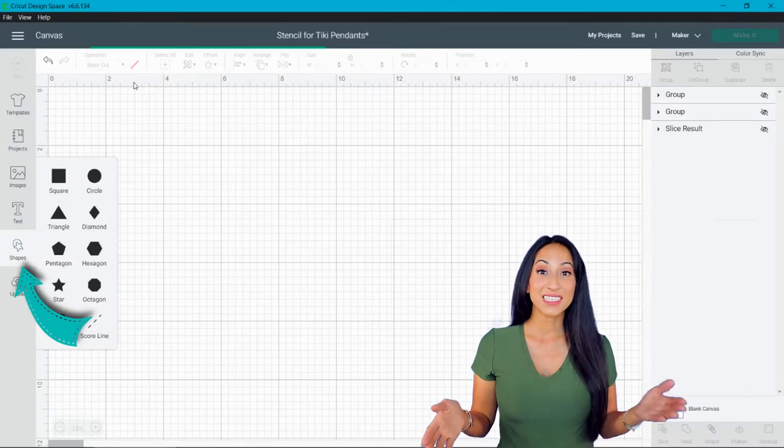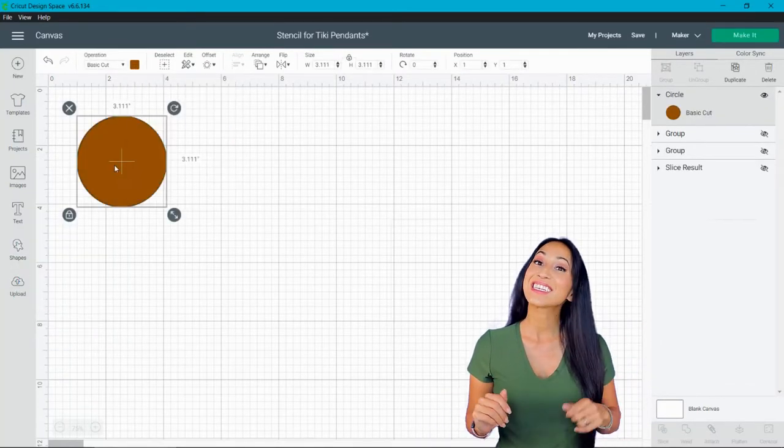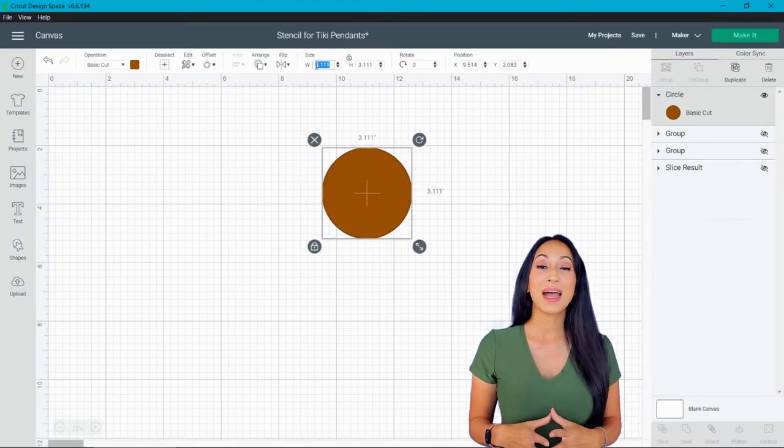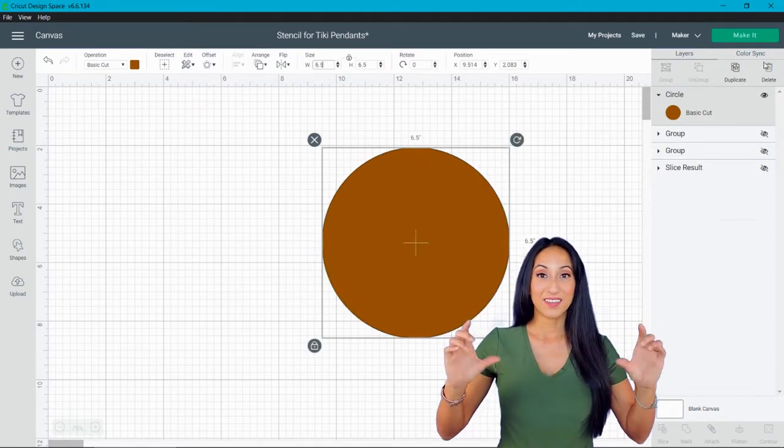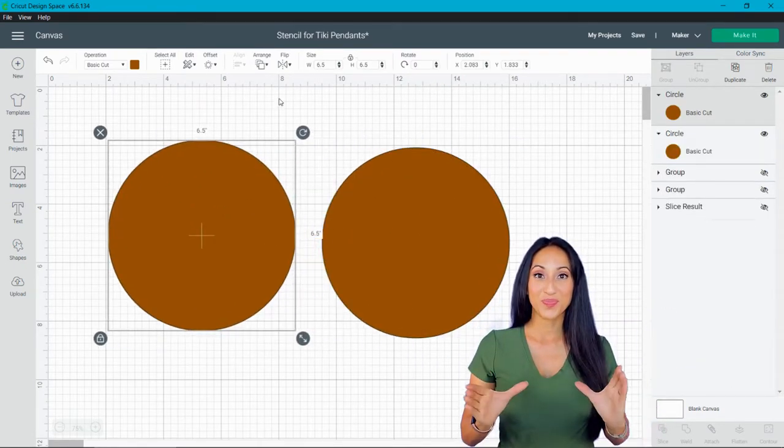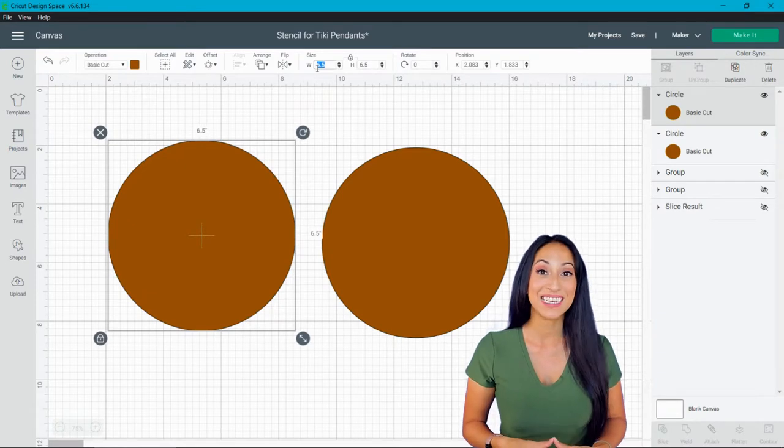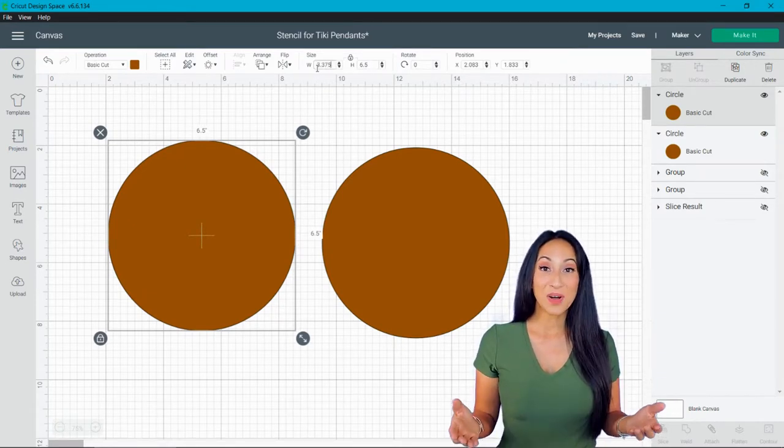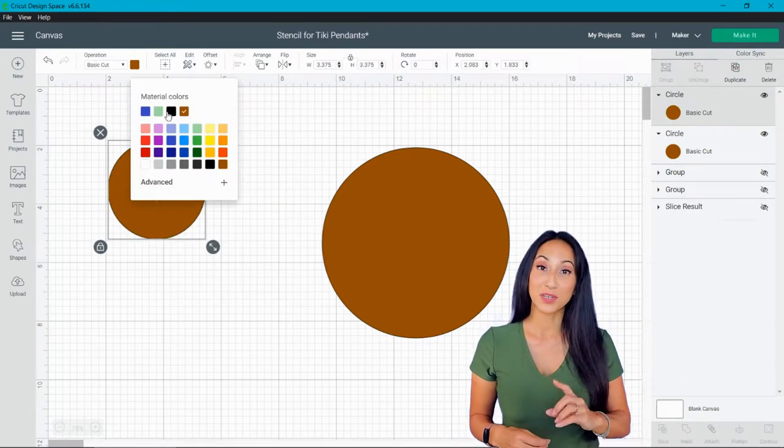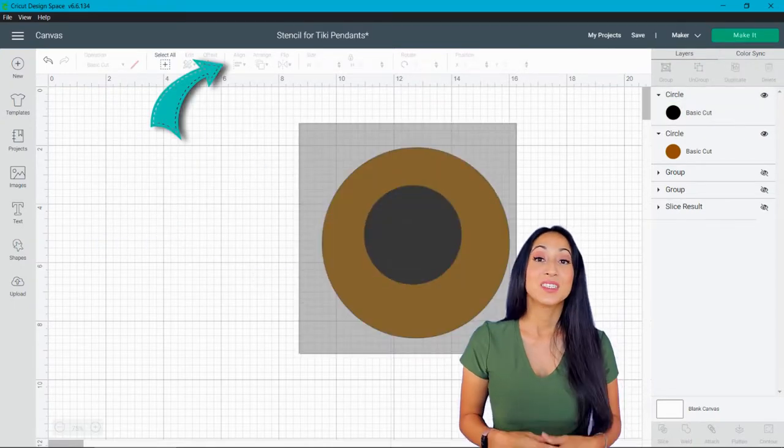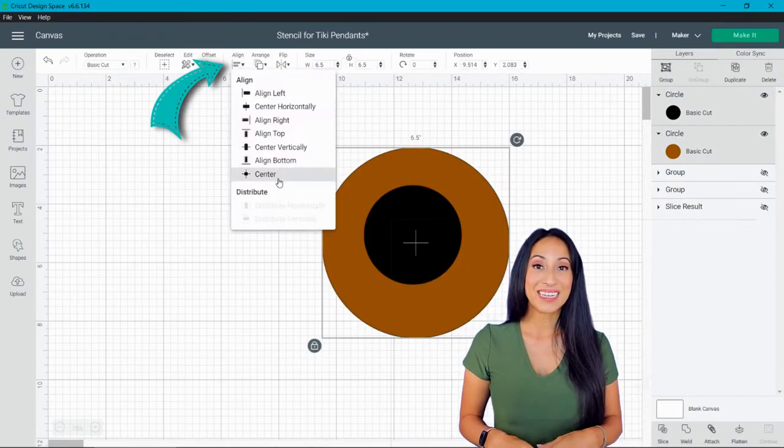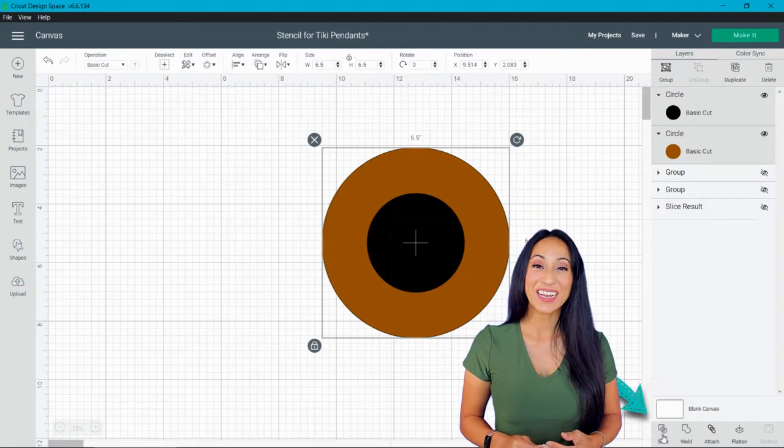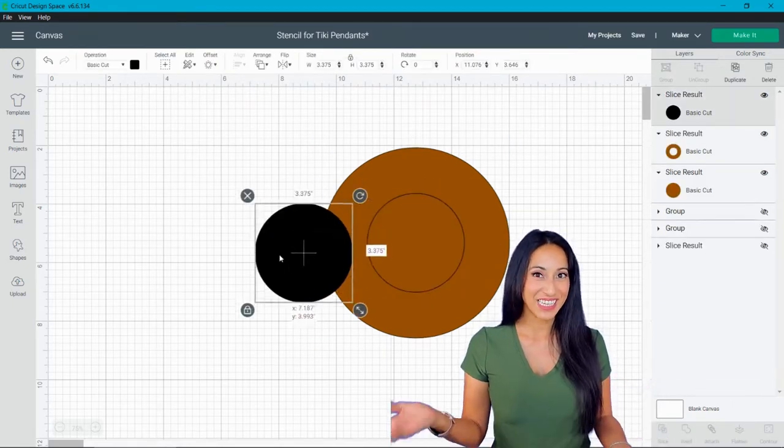In Cricut Design Space, you're going to go to Shapes, click Circle, and I'm making mine six and a half inches. This is for the large top part of my pendant light. And then I'm also going to make another circle smaller. So then you select both circles, align center to center, and hit Slice. And you can delete your excess.